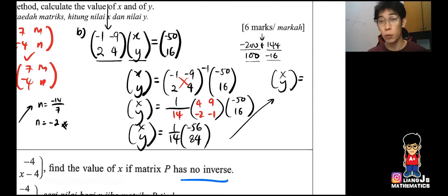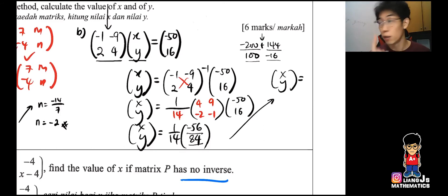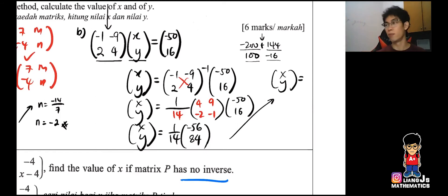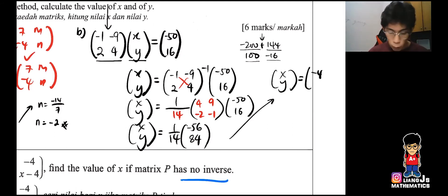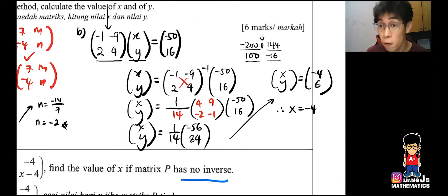Now I deal with the determinant fractions. Take 1 over 14 times negative 56 — be careful not to put a division line there as examiners may read it as a fraction. 1 over 14 times negative 56 gives negative 4, and 1 over 14 times 84 gives 6. Therefore X equals negative 4 and Y equals 6. That's the whole process.